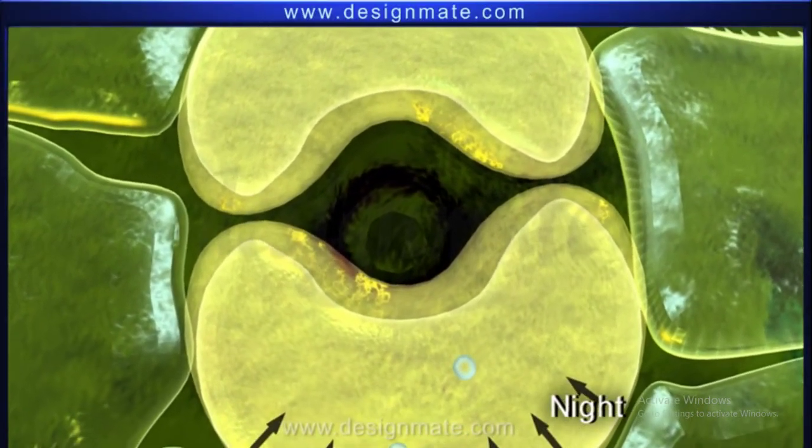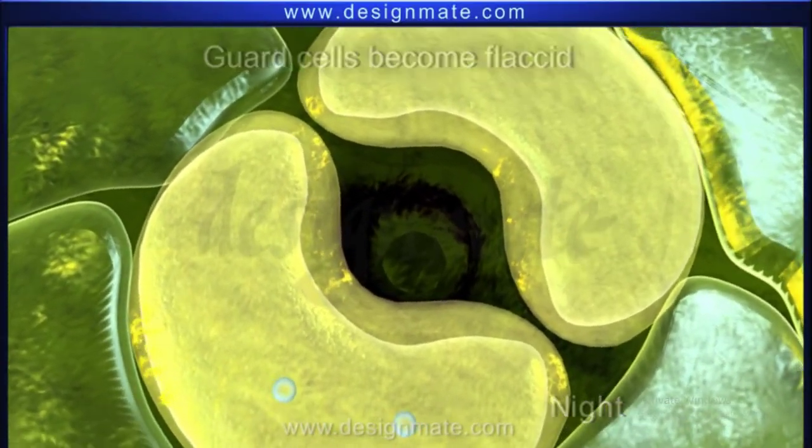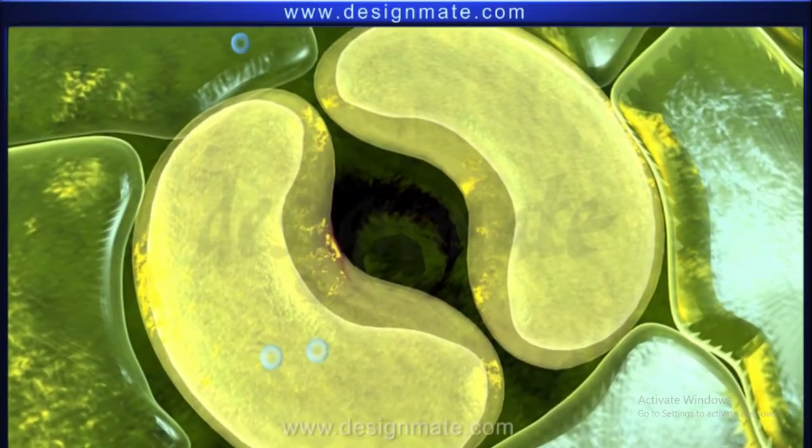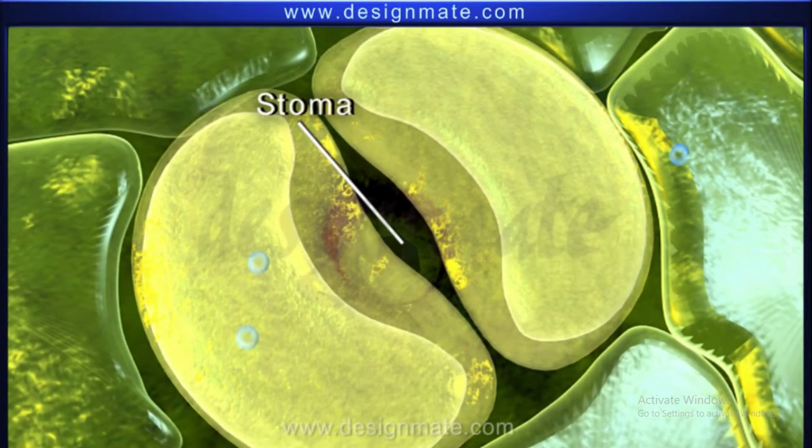During night, when the guard cells become flaccid, their inner cell walls return to their original position, resulting in closure of the stoma.